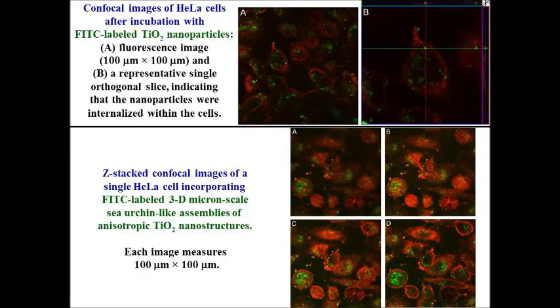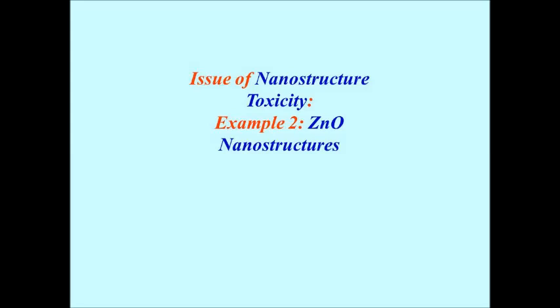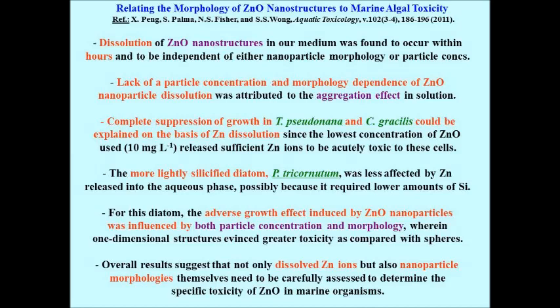For zinc oxide nanostructures, what I want to emphasize is that it's not only the tendency to dissolve zinc ions which matters, but also the nanoparticle morphology. Both particle concentrations and morphologies affect the growth of zinc oxide particles. Zinc oxide is used in sunscreen and ceramic dye coatings. Marine diatoms are useful for global carbon fixation, and many researchers have tried to understand whether particle concentration or particle size is more significant for zinc oxide toxicity — in other words, whether morphology, intercellular accumulation, or dissolution renders zinc oxide toxic.